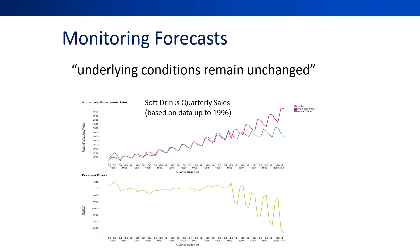In the example shown here, a regression model was developed in 1996 for generating quarterly forecasts. Although in 1996 the model performance seemed reasonable, over the next years the performance deteriorated dramatically, with the model drastically over-forecasting. Had we monitored this model, we might have discovered early on that there was a problem, and then remodeled the data.